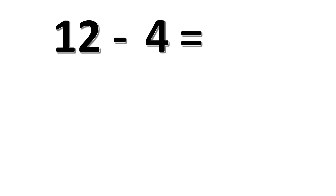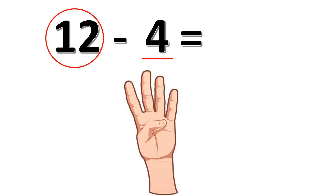Next example: 12 minus 4. Which one is the bigger number here? Yes, 12 is the bigger number. So we're going to start counting backward from 12. 12, 11, 10, 9, 8. So 12 minus 4 is equal to 8.